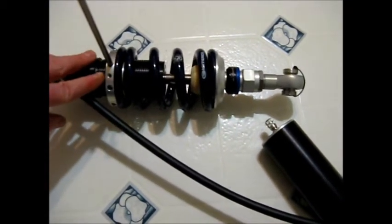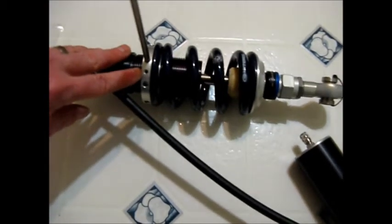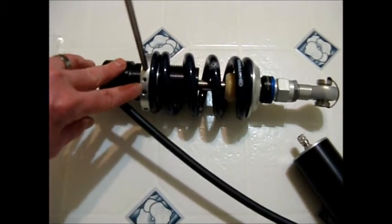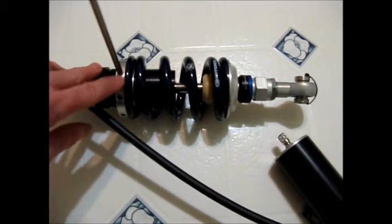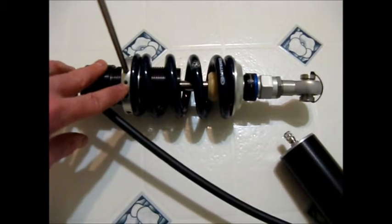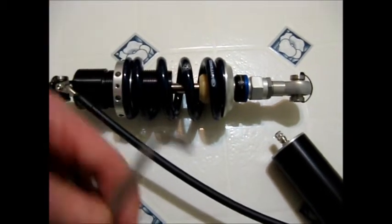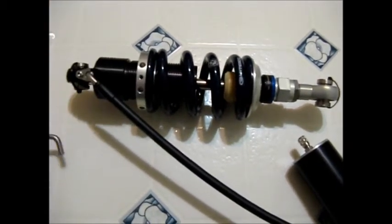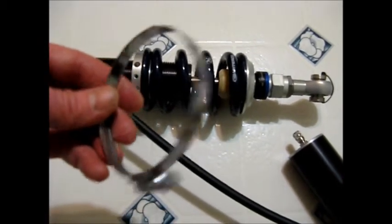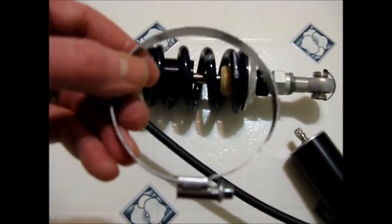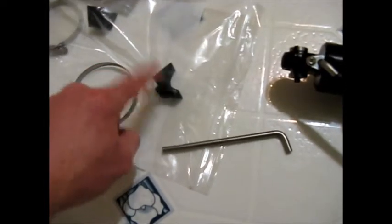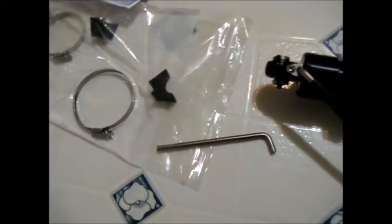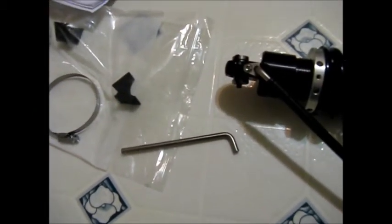Right here is the threaded Allen bolts that work as a lock bolt rather than a lock nut to set the spring tension the way you want it to. So that comes in a little package as well with some stickers, and I've already removed the two hose clamps in order to attach the remote reservoir to the subframe and these nice little rubber spacers here to make sure that there's some cushion between the remote reservoir and the subframe.